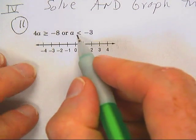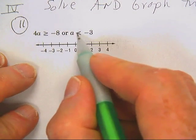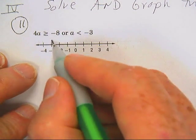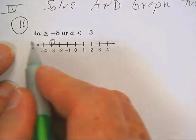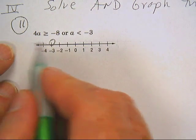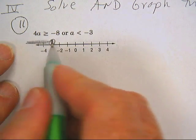Okay, we want to solve and graph. Well, for starters, a is less than negative 3, so it was going to be like this.